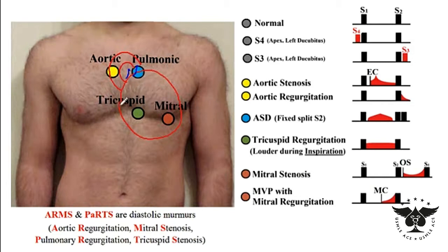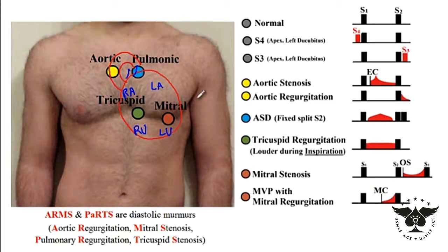With the right atrium, right ventricle, left atrium, and left ventricle in mind: tricuspid heart murmurs are best heard at the left lower sternal border, shown here in a green circle. Mitral heart sounds — like mitral stenosis or mitral regurgitation — are best heard at the apex of the heart, located between the left atrium and left ventricle. For atrial septal defect, since it's between the right and left atrium, it's best heard at the left upper sternal border, whereas ventricular septal defects — between the right and left ventricle — are best heard at the left lower sternal border.